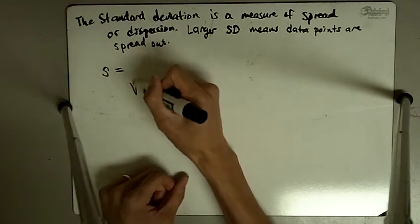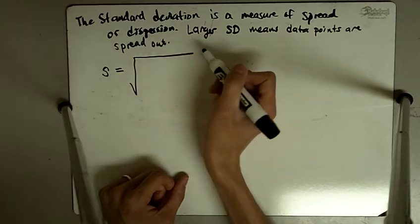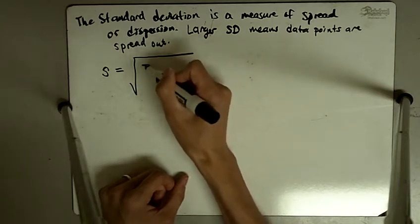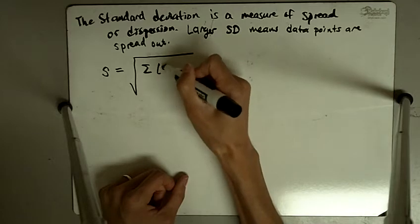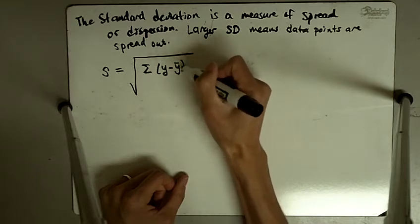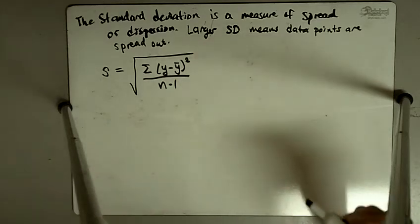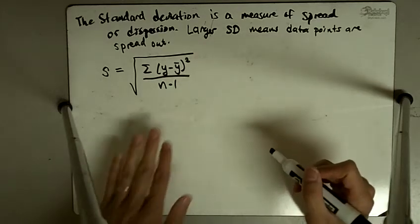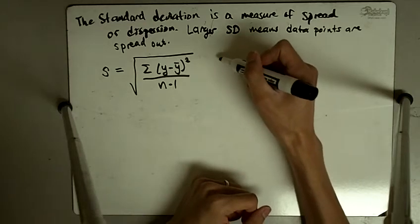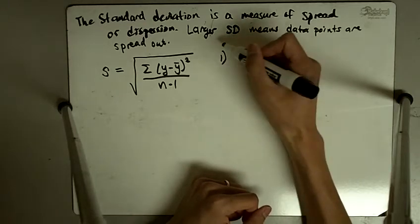And the formula for S is given by the square root of the sum of y minus y bar squared divided by n minus 1. It might look a little bit scary, but the steps are quite simple.